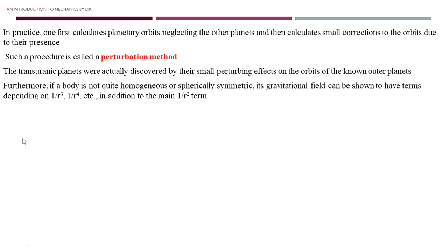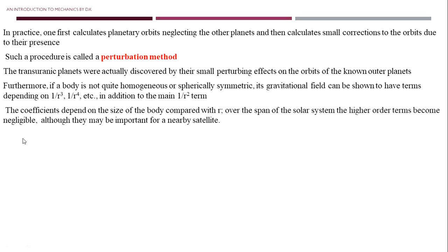Furthermore, if a body is not quite homogeneous or spherically symmetric, its gravitational field can be shown to have terms depending on 1/r³, 1/r⁴, and so on, in addition to the main 1/r² term. The coefficients depend on the size of the body compared with r. Over the span of the solar system, the higher-order terms become negligible, although they may be important for a nearby satellite.